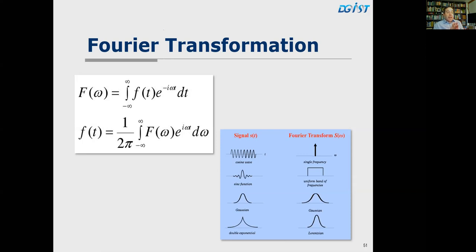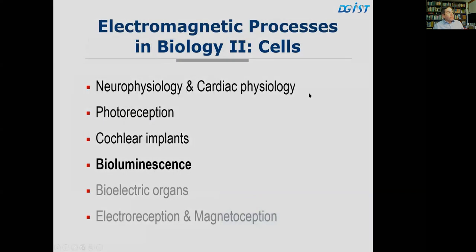That concludes this lecture on electromagnetic processes in biology in cells. Next week, lecture number seven will focus on organisms, covering bioluminescence, bioelectric organs, electroreception, and magnetoreception. Thanks very much and I'm open for questions now.